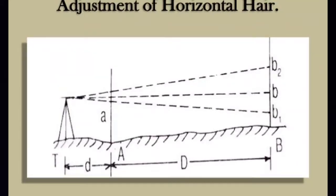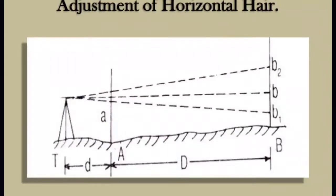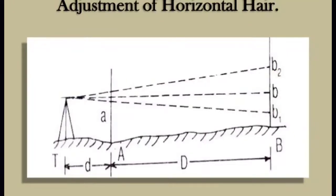The mean value of before-transiting and after-transiting readings is calculated — let it be small b. After turning the vertical diaphragm screw, the horizontal hair is adjusted to correctly coincide with that mean value. This process is repeated several times.